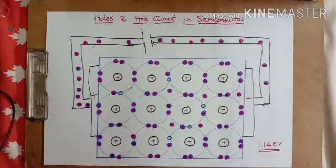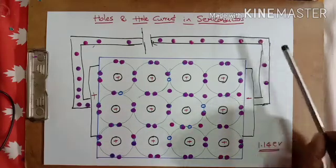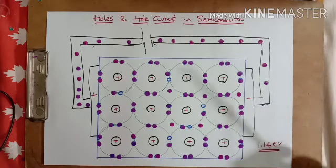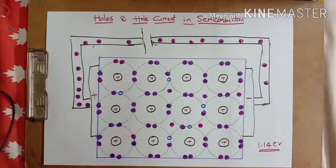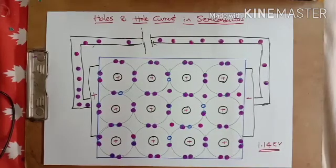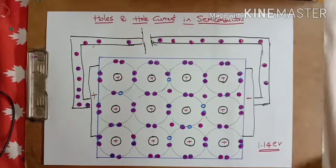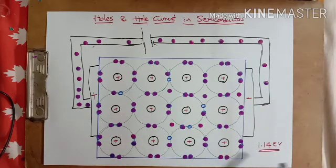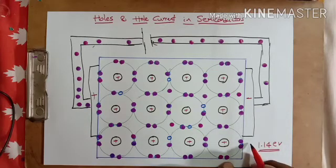So this is how holes can be explained in semiconductors. There is no concept of holes in metals. Holes only exist in semiconductors. Insulators also have an energy band gap but it is very large, so even at high temperatures no electron-hole pairs are generated, meaning no free carriers and no conduction of electricity.